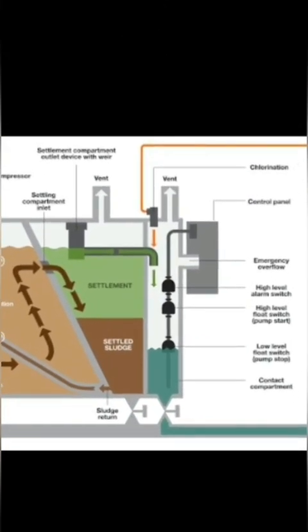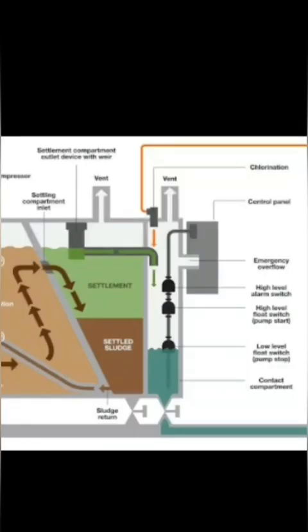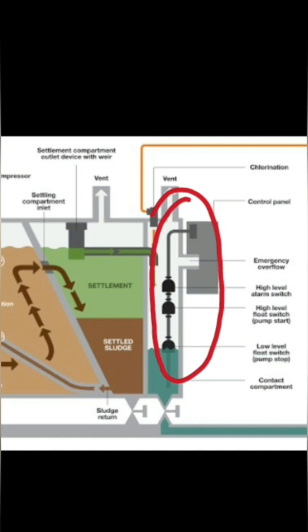Afterwards, as you can see here, the final chamber is the chlorination chamber. Here the clean sludge gets filled up and here we have the float switch. In the float switch there are three floats — namely the high-high level alarm switch which is on the top, the low level which is on the bottom most, and in between is the high level switch.